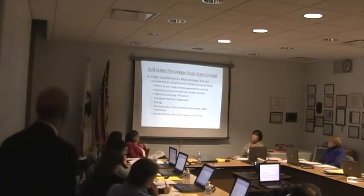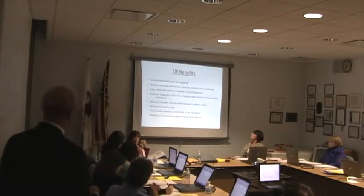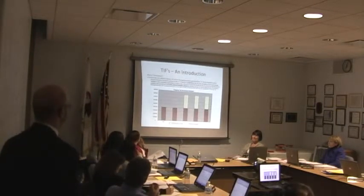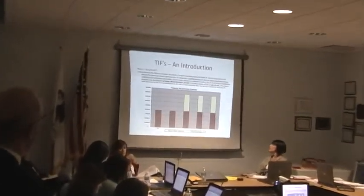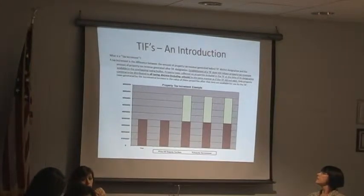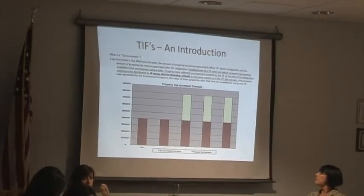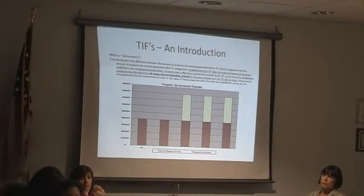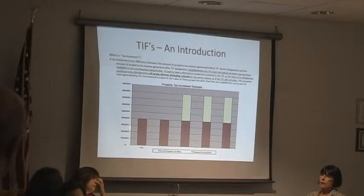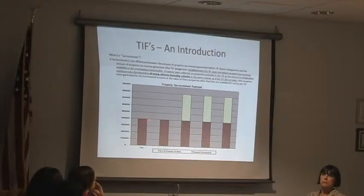Back to that bar graph you were showing — everybody loves that bar graph. In those first years, the taxing bodies don't benefit from the increment. These are considered the base years — this is just a generic example, and I think one of the later slides includes more detail, Ms. Hussain, in terms of our Waukegan Road TIF. But just as a sample or example chart, these are the base years.